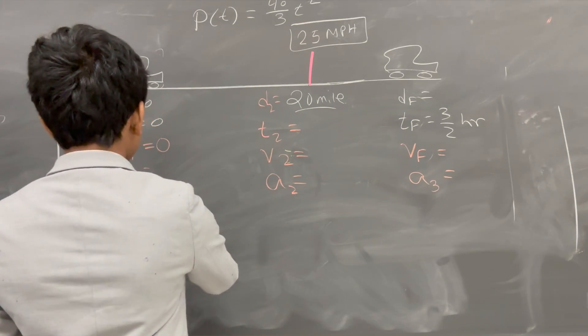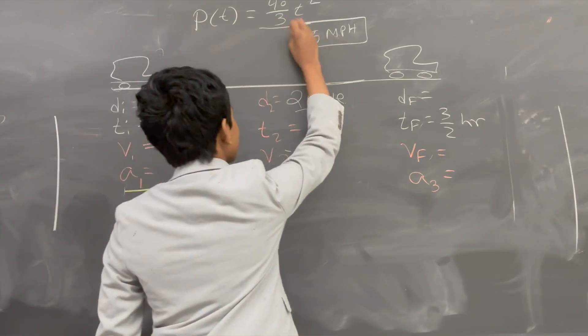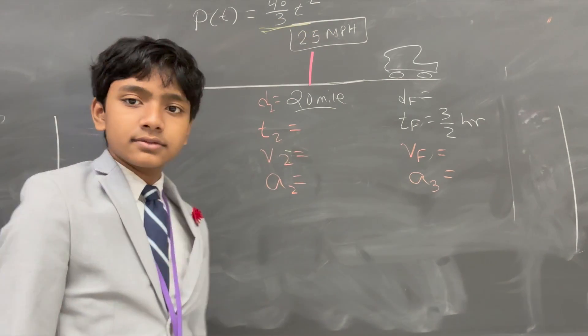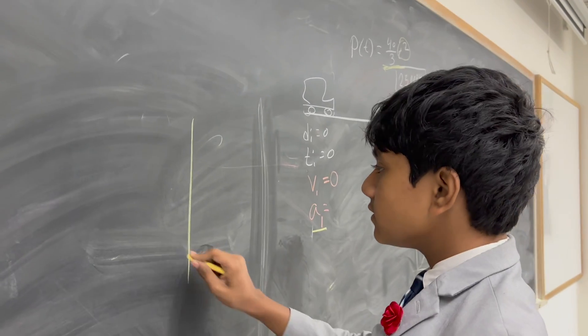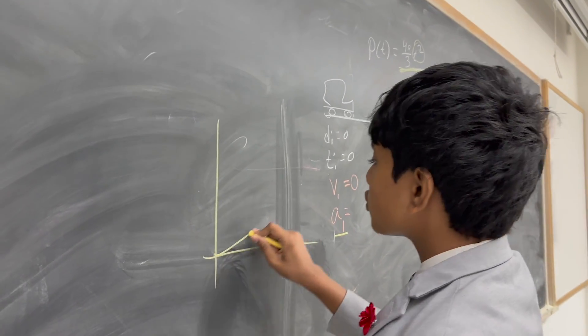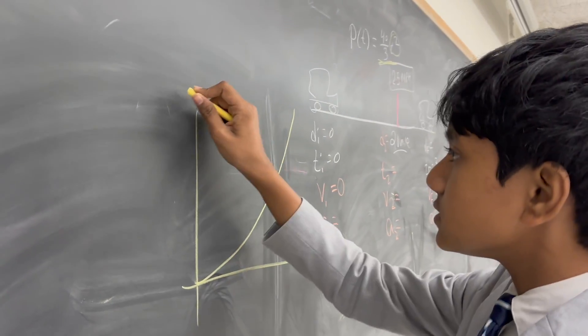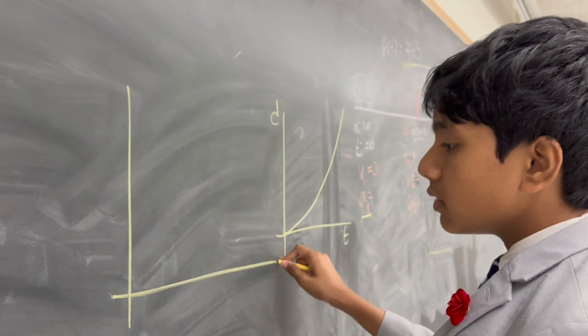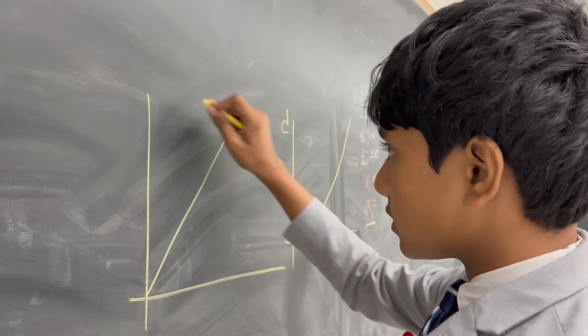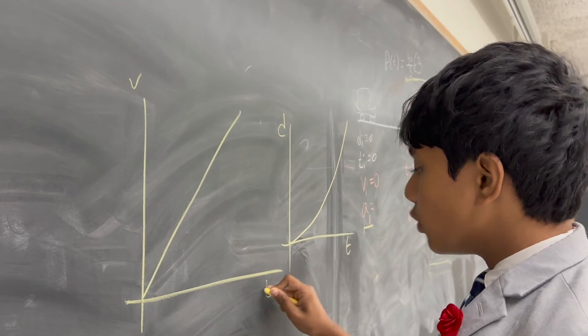All right. So first of all, acceleration initially. What do we see from this position? Oh, no calculus, by the way. Gotcha. What do we see from this position? If the distance over time changes quadratically, like this, then that means that speed over time will change linearly, like this.